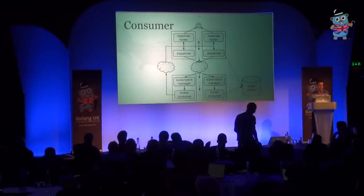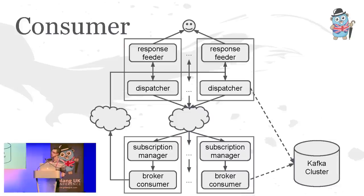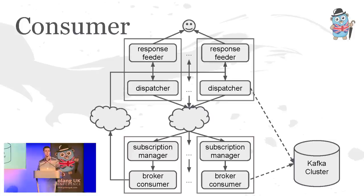The consumer came with its own set of challenges. Hopefully this diagram is slightly less scary now. We wrote it second — after the producer was done and in production — so we were able to apply a lot of what we learned to the consumer right off the bat, which saved us a lot of time and headache. It doesn't flow top to bottom like the producer did. It flows almost bottom to top, or inside out, which means I'm going to jump around a bit.